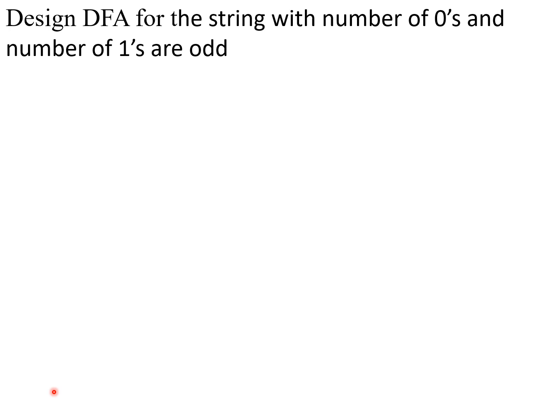For this, you need four states. As mentioned, you can answer four questions by solving it once — just keep changing the final state. I'll first solve it for the case where the number of zeros and number of ones are both odd.